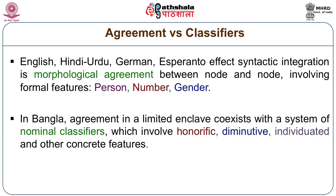Both in agreement and in classification, we are looking at the semantic features of nouns, in terms of which they get broken up into subclasses. In agreement languages, the relevant features tend to be person, number, and gender. In classification languages, we divide nouns into extremely diverse types — honorific, diminutive, individuated, segmental, stick-shaped, tooth-shaped, fragmentary, complete, collective, and so on. It is very diverse indeed.